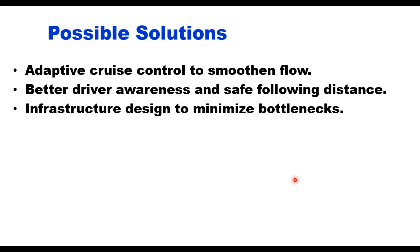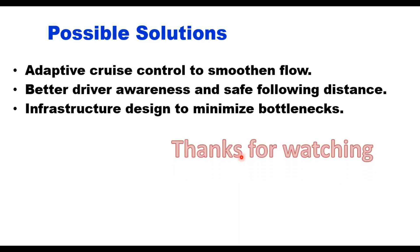A possible solution is to adopt cruise control to smoothen the flow, along with better driver awareness and safe following distance. If nobody applies the brake unnecessarily or changes lanes without need, this situation can be avoided. Infrastructure design to minimize bottlenecks also helps. Finally, phantom jams are a result of human behavior plus traffic flow dynamics. Even without an accident, small disturbances can trigger big slowdowns, and that can be avoided by smarter driving and technology. Thank you very much for watching — you can share the link with your friends, and if you have any questions, write in the comment box.